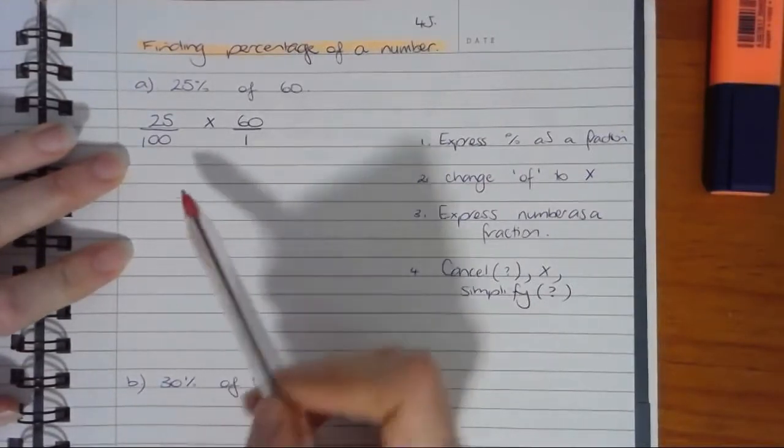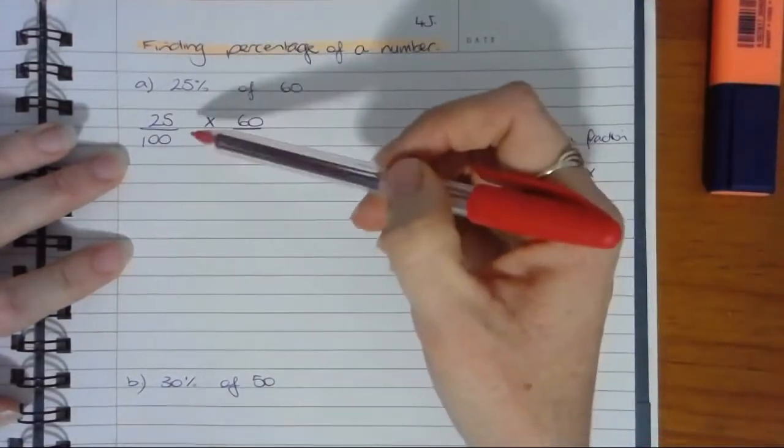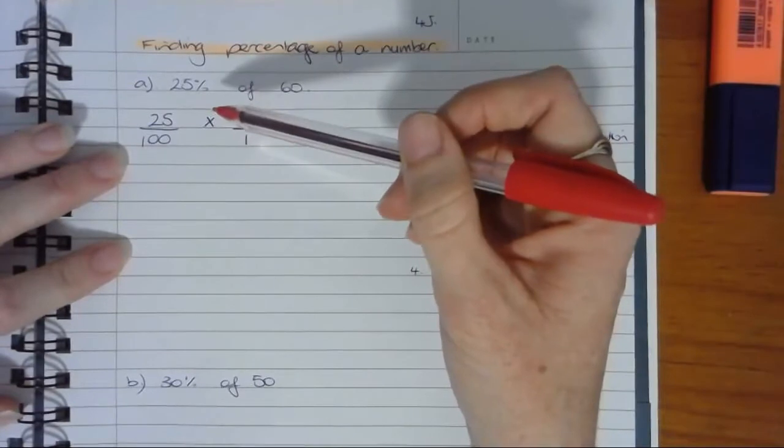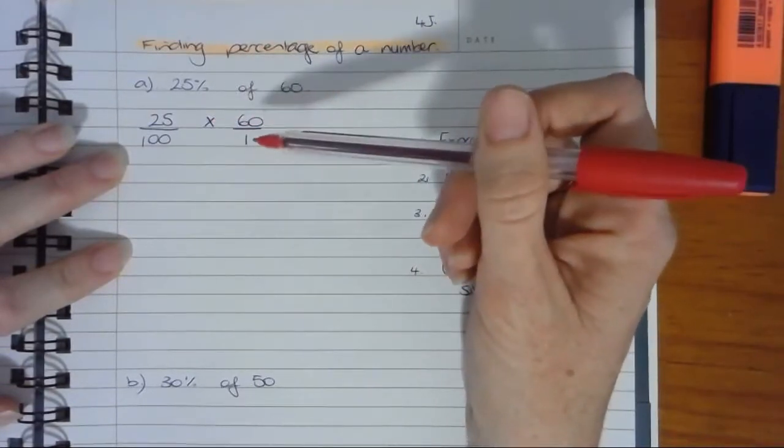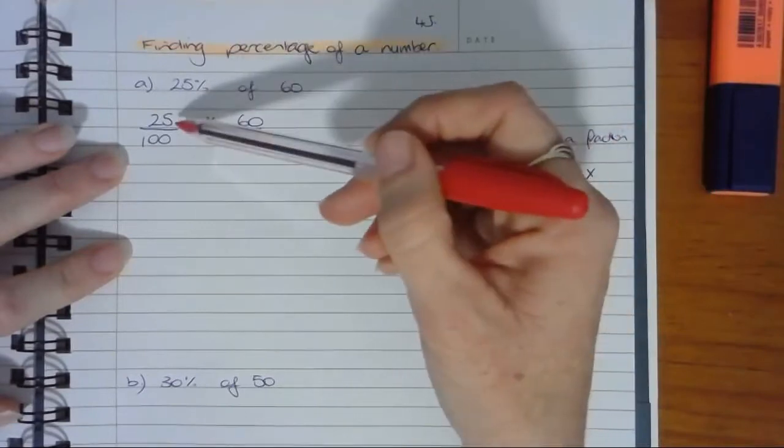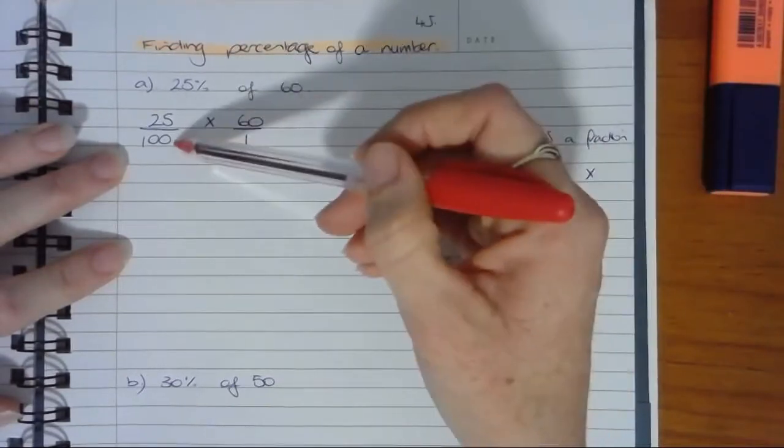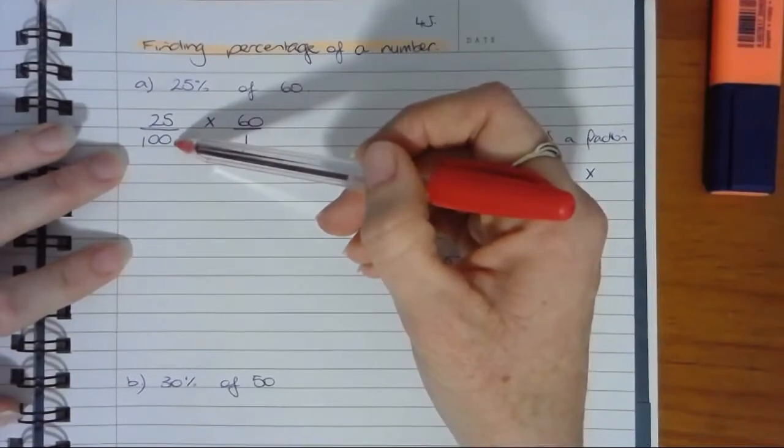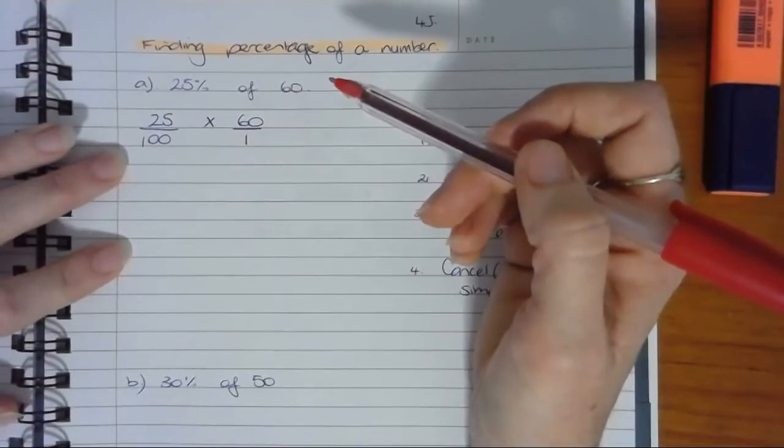Actually now that I look at this question, there's two possible things I could do to cancel. Whenever we're cancelling, we're looking at a numerator and a denominator, but it doesn't necessarily have to be from the same fraction. I could cancel 25 and 100, or I could cancel 60 and 100. I tend to always choose the two largest numbers first,